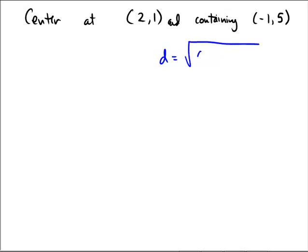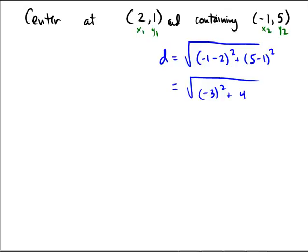And in this case, we'll get x2 minus x1 squared plus y2 minus y1 squared. We're getting x1, y1 from here, and x2, y2 from here. This is equal to the square root of negative 3 squared plus 4 squared, which is the square root of 9 plus 16, or the square root of 25, which is just 5.